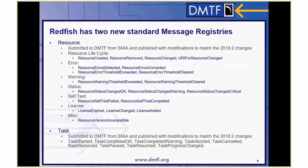The resource message registry is meant to be generic and not specific like a network device function registry, storage registry, or other more service-oriented registries we hope to develop. We also developed a task registry — this one came in from SNIA as well and was modified to match 2018.2. It includes the events you'd expect: task started, task completed (OK or warning), aborted, canceled, task removed, paused, resumed, or task progress changed.